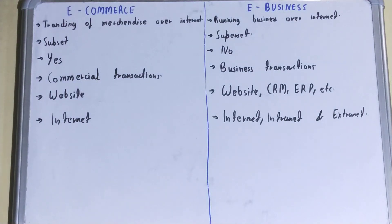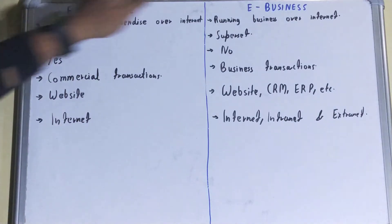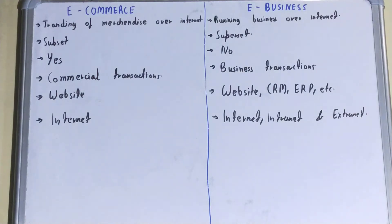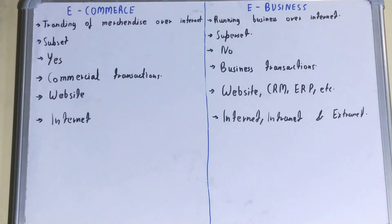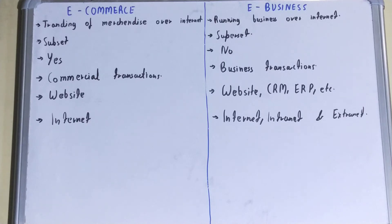In this video, I'll be covering the difference between e-commerce and e-business. E-commerce is the trading of merchandise over the internet. Whenever you buy or sell goods over the internet, it comes under e-commerce. For example, you go on Amazon, place an order for a particular product, and get it delivered to your home — that comes under e-commerce, where we are exchanging goods.